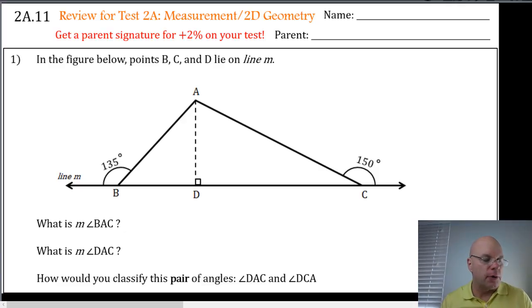This is the video for page one of your review for your next test on two-dimensional geometry and measurement. Problem one says, in the figure below, points B, C, and D lie on line M. We see line M here. It's this line that includes all points in the base of this triangle.